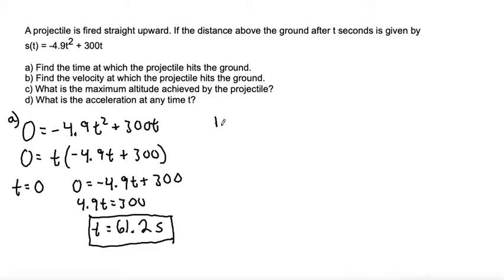For part B, it says find the velocity at which the projectile hits the ground. So we already know the time when the projectile hits the ground. We can find the velocity because the velocity is the derivative of the distance function.